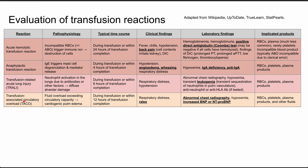A less severe reaction is transfusion-associated circulatory overload, also called TACO. The pathophysiology is fluid overload exceeding the circulatory system's capacity, leading to cardiogenic pulmonary edema — essentially too much volume put into the patient causing swelling in the lungs. This can happen during the transfusion or within 12 hours of transfusion completion. The patient will have respiratory distress and rales, just like in other causes of pulmonary edema. Lab findings include an abnormal chest x-ray, hypoxemia, and an increased BNP, reflecting the cardiogenic etiology. This can happen with all types of blood products, especially in the setting of many other fluids contributing to circulatory overload.